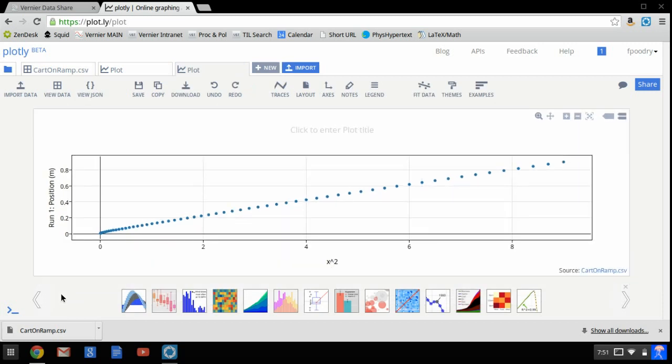So there are some things that I can do with this. For one thing, I can edit this axis label. So instead of X squared, it says time squared. I can put a title up here, Position versus time squared.